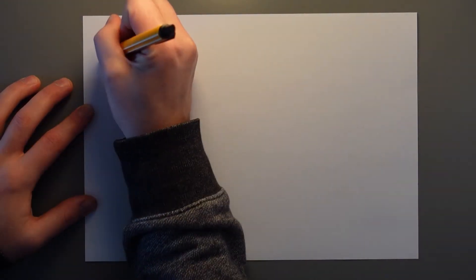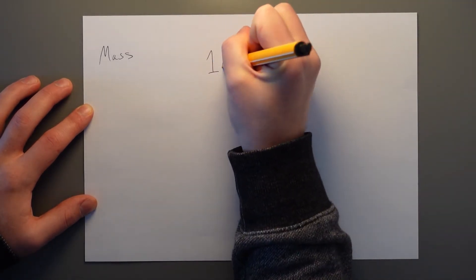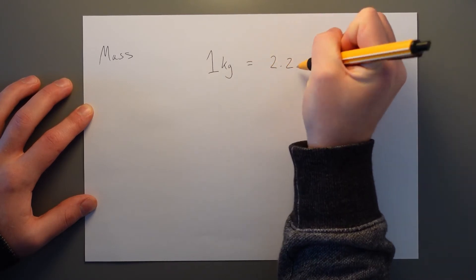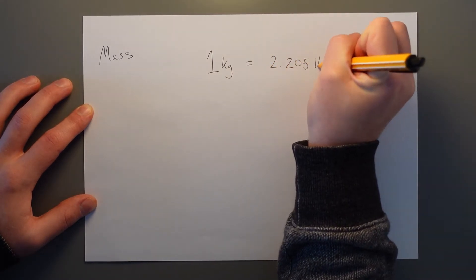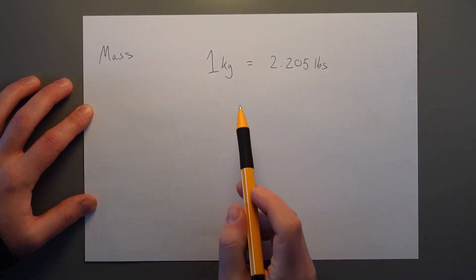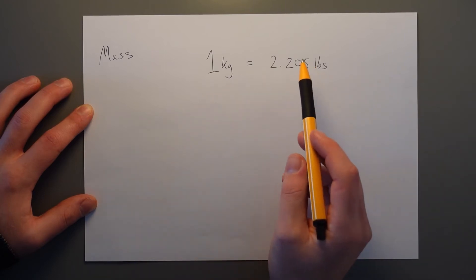The next unit to talk about is mass. For every kilogram, we have 2.205 pounds. So if we want to get from kilos to pounds, we multiply by 2.205 and pounds to kilos, we do the inverse.